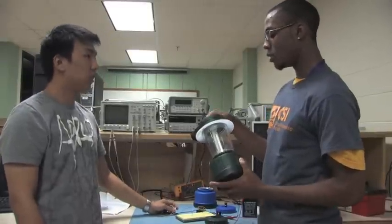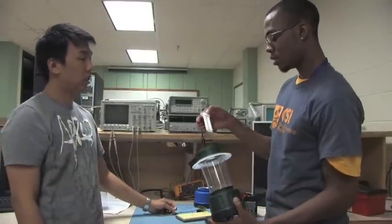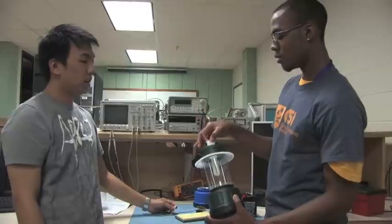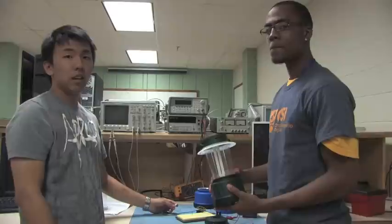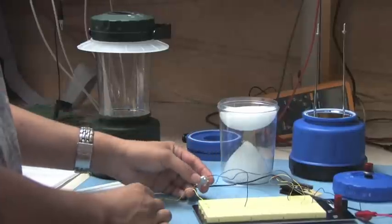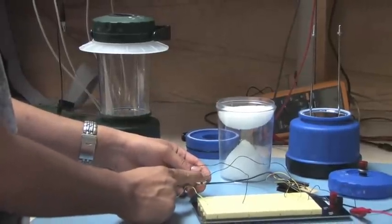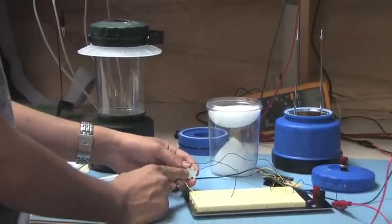A typical solar lantern uses a fluorescent tube, kind of like this. But for our research, we're using light emitting diodes, which is short for LEDs. And compared to a fluorescent tube, it only draws in from one to two watts of power and can last more than six years.